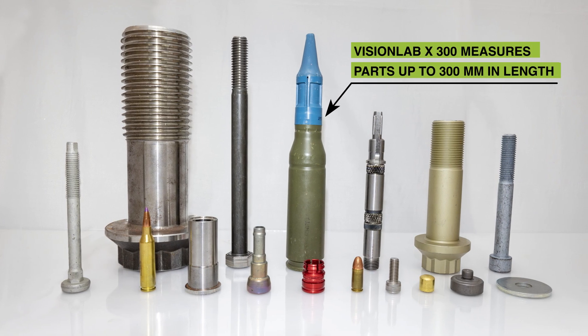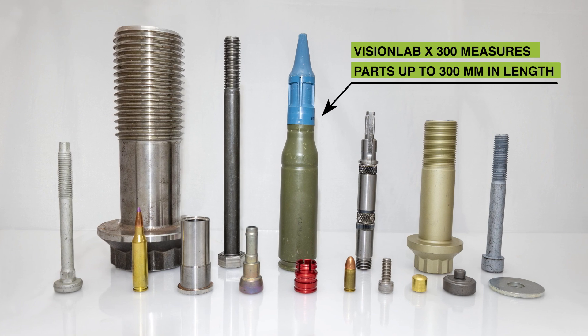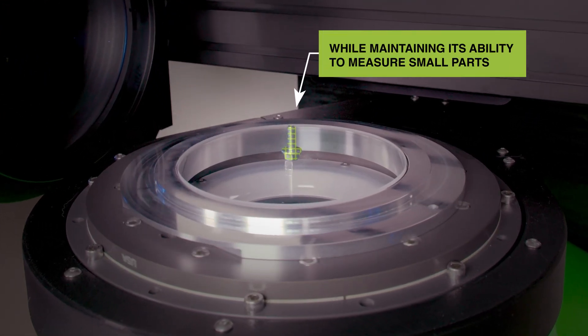VisionLab X300 can measure parts up to 300 mm in length, while maintaining its ability to measure small parts.